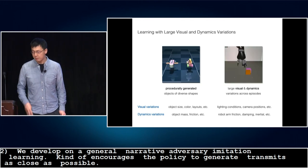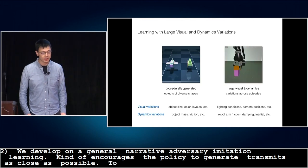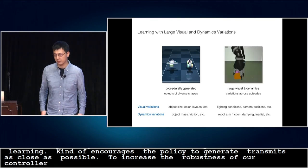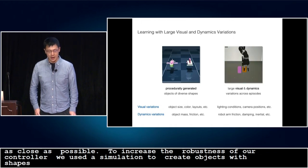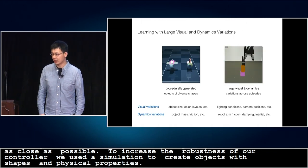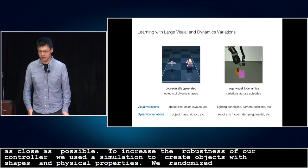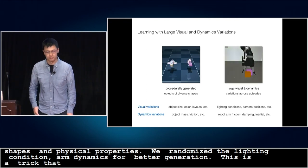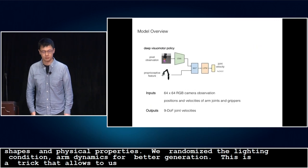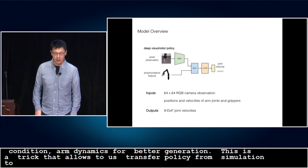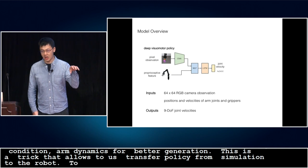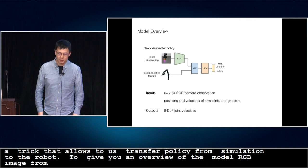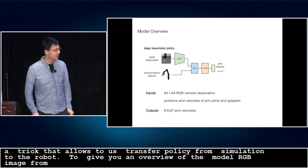To increase the robustness of our controller, we use procedural generation to create objects with varying shapes and different physical properties. We also randomize the lighting condition and the arm dynamics for better generalization. This is the trick that allows us to transfer the policy from simulation to the real robot. The input to the policy is an RGB image from the camera and proprioceptive features of the arm, and the output is 9 degrees-of-freedom joint velocity control commands.